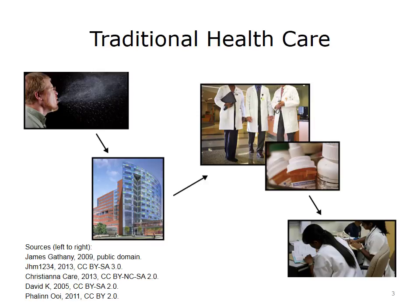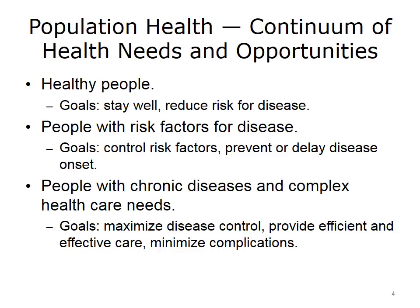Traditional health care is seen when a person becomes ill, or even acutely ill, and goes to the local hospital or clinic and is treated by a group of health care professionals who often collaborate and determine the best care for the patient. So patients often enter the health care system when they're already sick. A different model of care, with the goal of keeping people healthy, thinks of health needs and opportunities on a continuum, including portions of the population with risk factors for disease. The goals in this segment are to help control risk factors to prevent and delay disease onset.